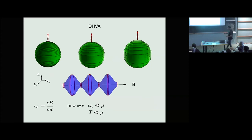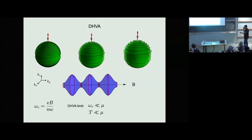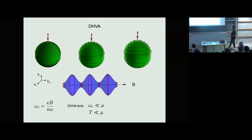I want to define what's called the de Haas van Alphen or dHvA limit. We're going to be interested in frequencies — actually the cyclotron energy Omega_C — much less than the Fermi energy, and temperatures much less than the Fermi energy. But the ratio of Omega_C to temperature can be arbitrary. Because we're in this dHvA limit, the contribution to quantum oscillations comes primarily from the extremal orbits of the Fermi surface — the so-called extremal orbits — which have the feature that the Fermi velocity along the direction of the magnetic field vanishes.